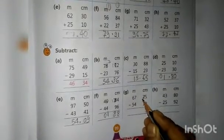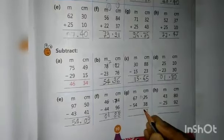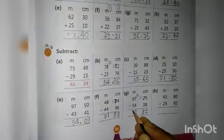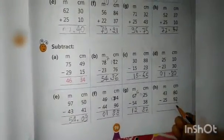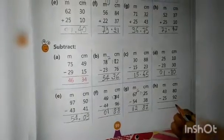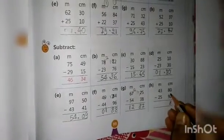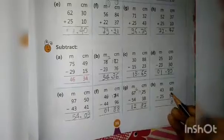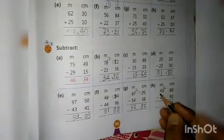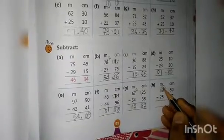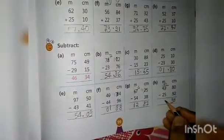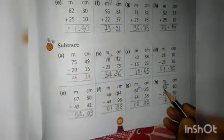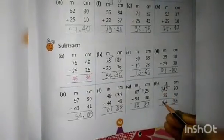Next: borrow making it 11; 11 minus 3 is 8. Then 6 minus 4 is 2, 6 minus 5 is 1. Here 0 becomes 10; 10 minus 2 is 8. Then borrow making it 18; 18 minus 9 is 9. Borrow again making it 12; 12 minus 5 is 7. Then 3 minus 2 is 1.